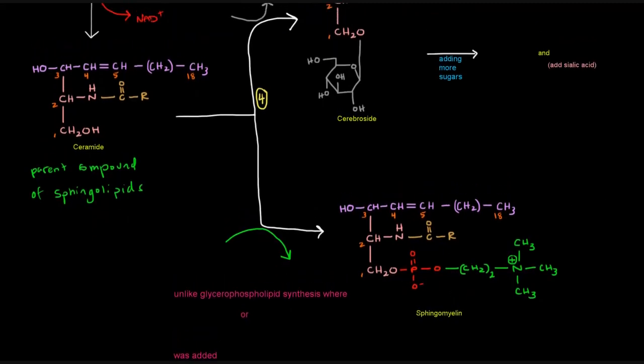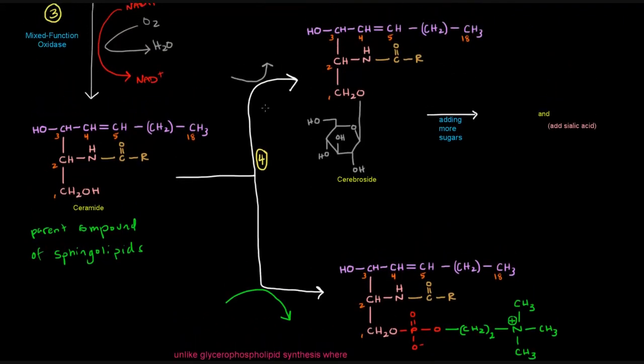To get a cerebroside and attach this sugar on here, this is specifically glucose, that needs to come from an activated glucose, so specifically UDP glucose. We've seen UDP glucose in glycogen synthesis. UDP glucose is basically an activated glucose. That's going to come in, and the glucose will be attached while the UDP will fall off. We could also add galactose using UDP galactose.